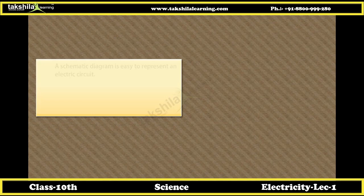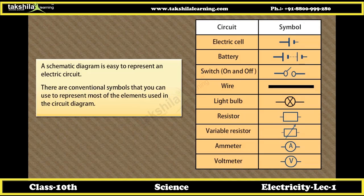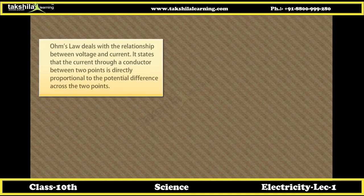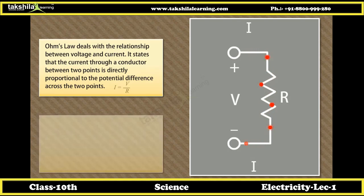Circuit diagram. A schematic diagram is used to represent an electric circuit. There are conventional symbols to represent most elements used in a circuit diagram. Ohm's Law deals with the relationship between voltage and current. It states that the current through a conductor between two points is directly proportional to the potential difference across the two points.